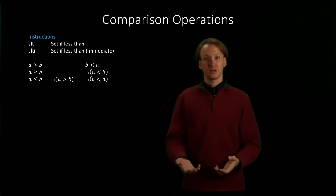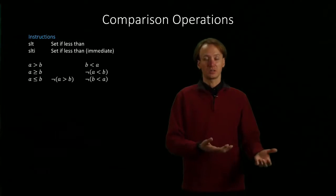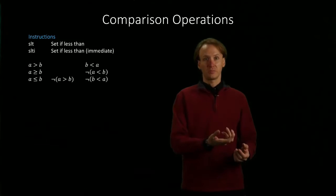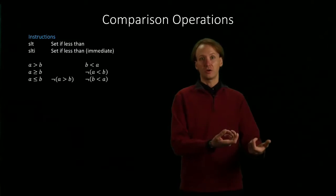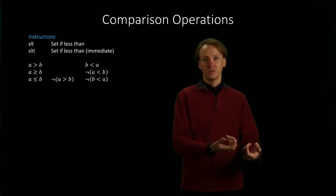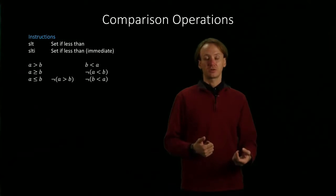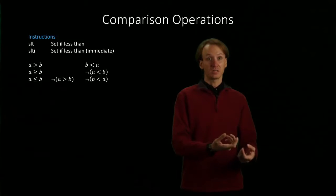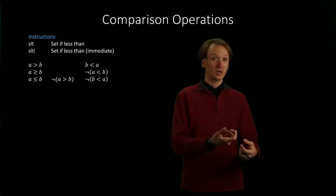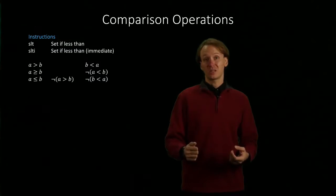So if I have, say, set less than t0, t1, t2, you would compare the value in t1 to the value in t2. And if t1 is less than t2, it sets t0 to 1. If t1 is equal to t2 or is greater than t2, then t0 gets set to 0.